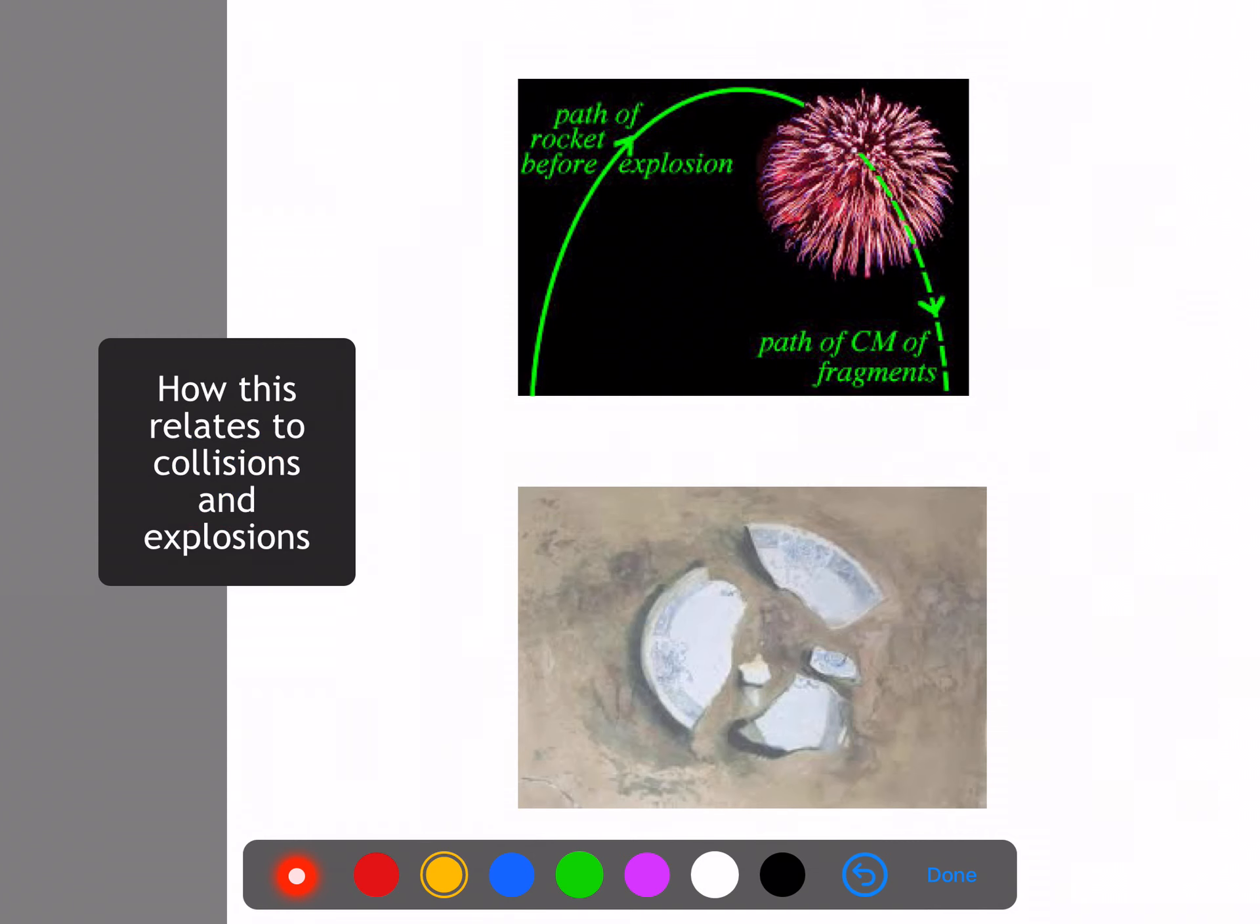We talked about how the center of mass becomes relevant when we're thinking about explosions and how, for example, with the plate, the center of mass just sort of stayed there. These things all cancelled. Or if you had something that was in motion and then it exploded, you would see that the center of mass continues on this path. If you were to add up all of these little momentum vectors, then you would see that the center of mass effectively travels as it would have if it hadn't exploded.